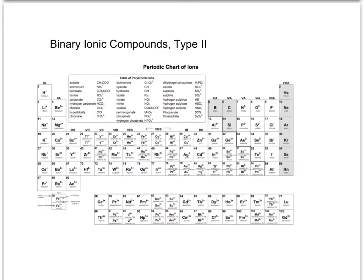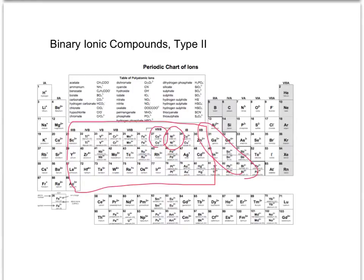The harder ones are Type 2 binary ionic compounds. We have the transition metals and the post-transition metals. These can — not always, but can — have more than one charge. Nickel can be +2 or +3. Cobalt can be +2 or +3. Copper can be +2 or +1. Lead is +2 or +4.